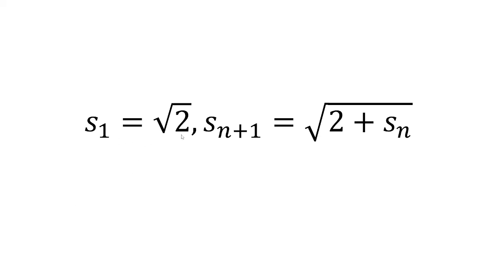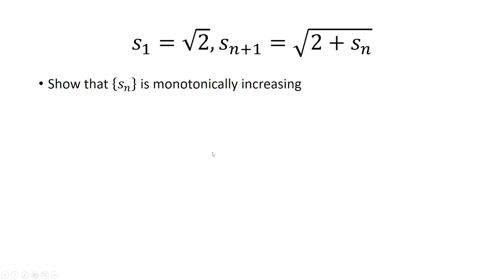We're given s₁ is equal to square root of 2, and s_{n+1} is equal to the square root of 2 plus s_n. Let's show that the sequence s_n is monotonically increasing.